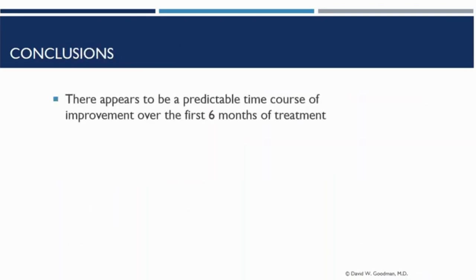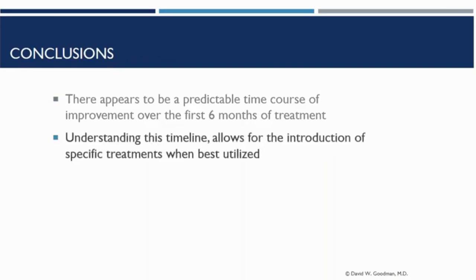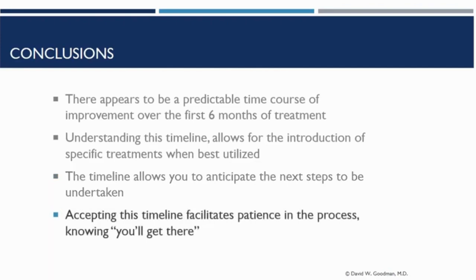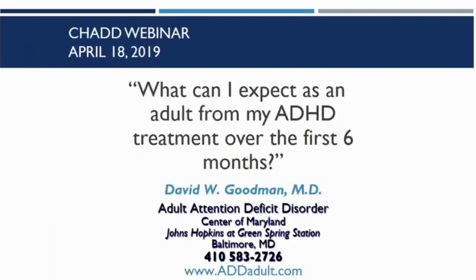What are the conclusions? I believe that there is a predictable time course of improvement over the first six months. Understanding this timeline allows for the introduction of specific treatments when they are best utilized — when do you introduce medication, cognitive behavioral therapy, insight-oriented therapy, or family and couples therapy? The timeline allows you to participate in the next steps to be undertaken. Accepting this timeline facilitates patience in the process: if you know what we're doing at each time point, there is confidence and hope that you'll eventually get to where you want to be. Thank you for your attention — hope this has been helpful. It's very concrete information.